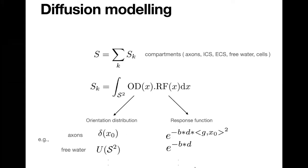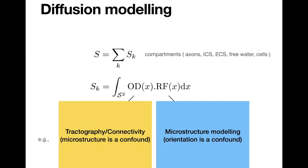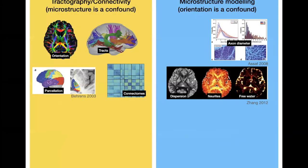There are a number of different ways of improving on these. You can have higher-order terms in the B-value to model more complex diffusion, or you can have more complex orientation distributions, for example fitting spherical harmonics. These two quantities — the orientation distribution and the response function — summarize the two fields in diffusion modeling. One field is interested in tractography and connectivity, and one is interested in microstructure modeling. In tractography, microstructure is a confound that is important to account for but not of direct interest, whereas in microstructure modeling, the orientation distribution is a confound.